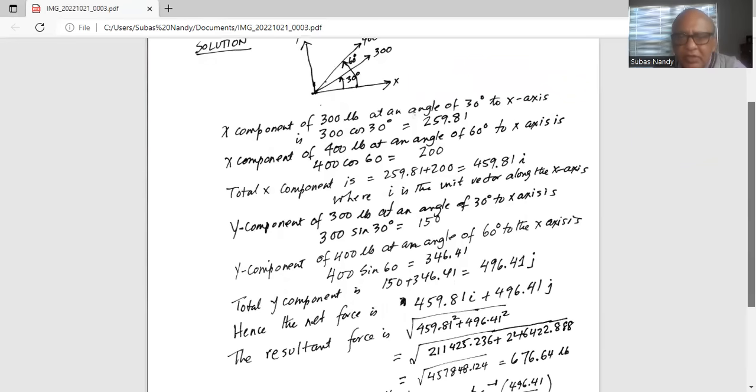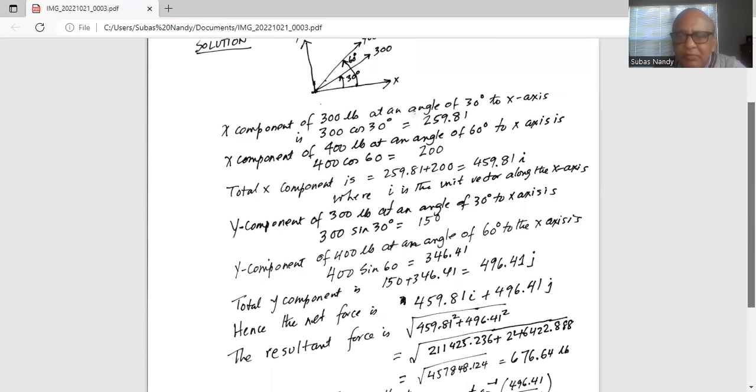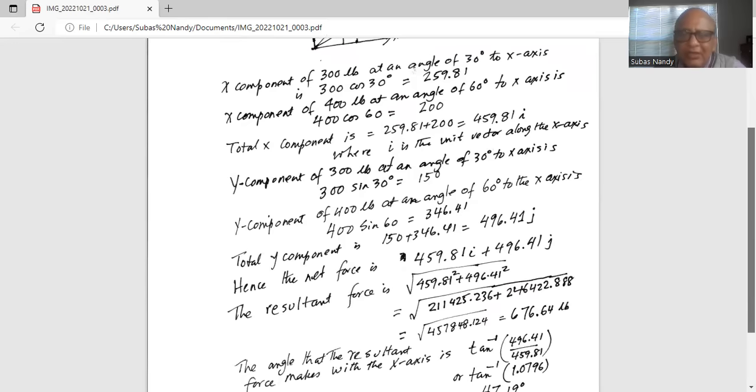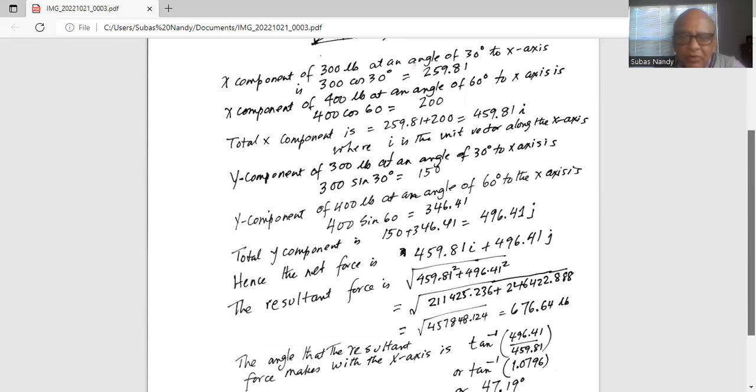Hence the net force is 459.81i plus 496.41j. The magnitude of the resultant force is the square root of 459.81 squared plus 496.41 squared, which works out to 676.64 pounds.